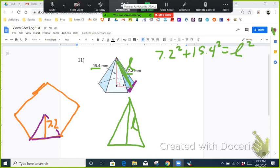Okay, so to find the slant height, we're going to do the Pythagorean theorem using the actual height and this apothem as the legs. And then the hypotenuse is the slant height, it's L. So we do 7.2 squared plus 15.4 squared equals L squared. Take the square root of both sides, and we get that L of 17.